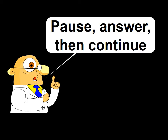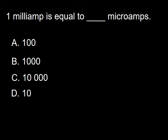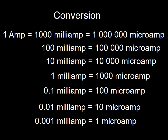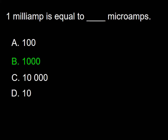The first question is: 1 milliamp is equal to how many microamps? A: 100, B: 1,000, C: 10,000, D: 10. I already presented this table to you during the first part of this talk. I do so again because it is important to have a concept of units, milli-units, and micro-units clearly in your mind. In this case 1 milliamp is equal to 1,000 microamps, so the answer to this question is B.